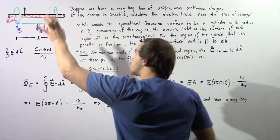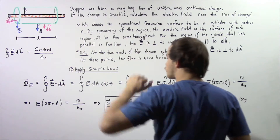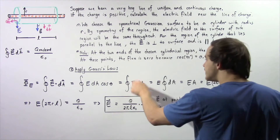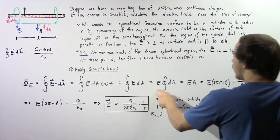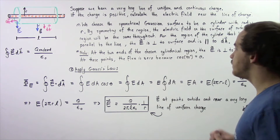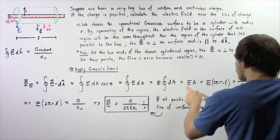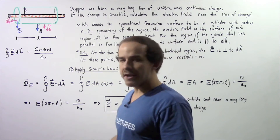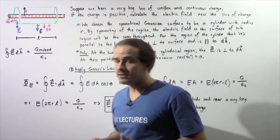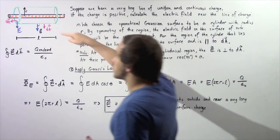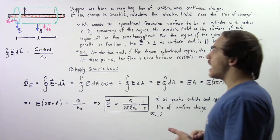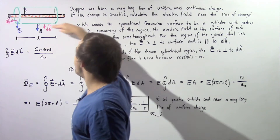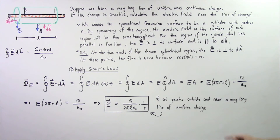By the symmetry of this chosen Gaussian region, E is constant in magnitude, so we bring it outside of the integral. We integrate and get E multiplied by A. The surface area of this particular cylinder is simply the circumference multiplied by the length — the circumference of the circle multiplied by the length gives us the surface area, which is 2πRL.